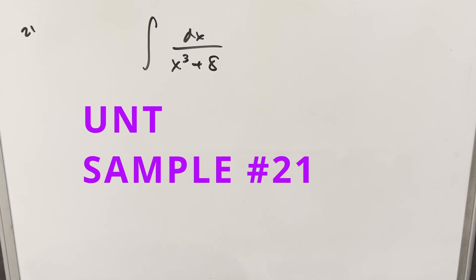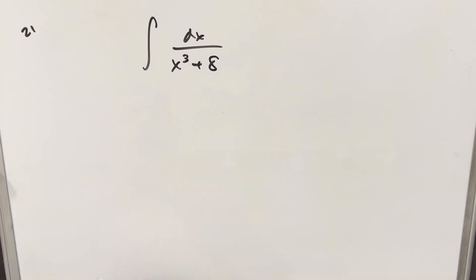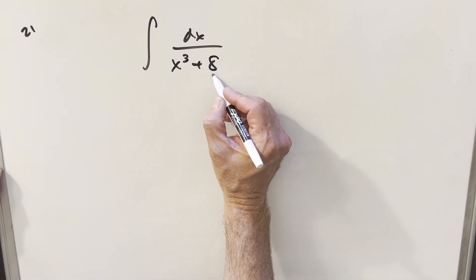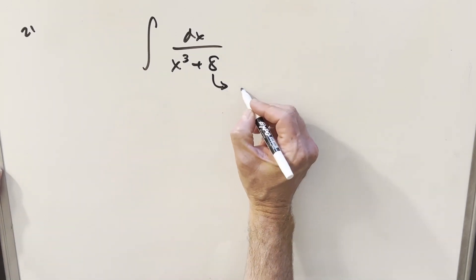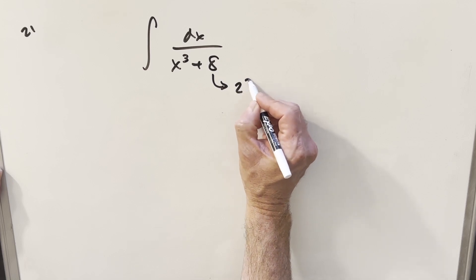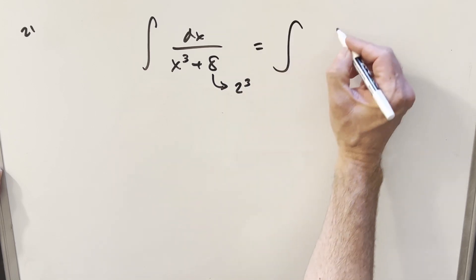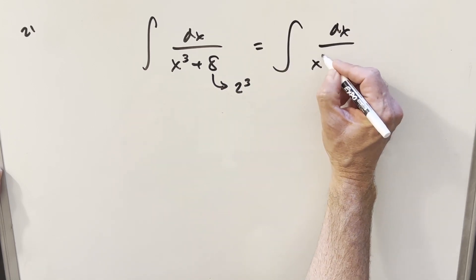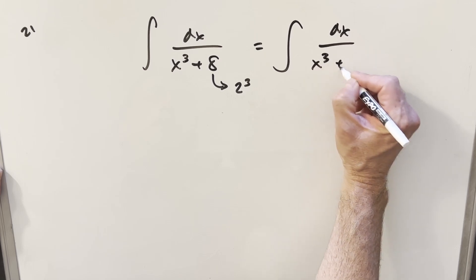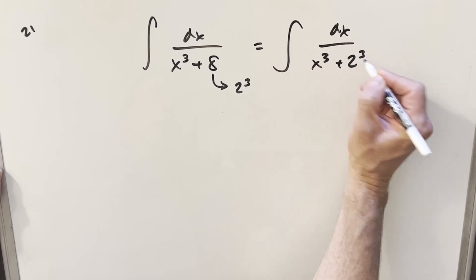We have another integral from the UNT Integration Bee, sample problem number 21. We have the integral of dx over x cubed plus 8. The first thing to notice is this 8 — we can write this as 2 cubed. So I'm going to rewrite this as x cubed plus 2 cubed.